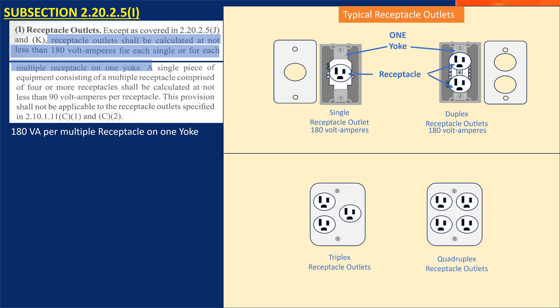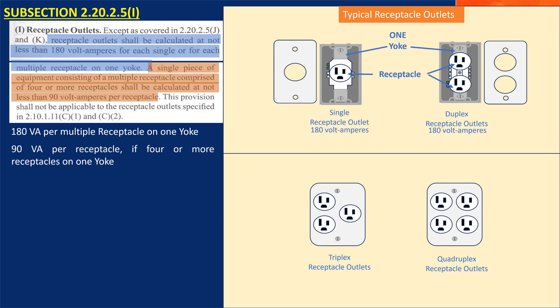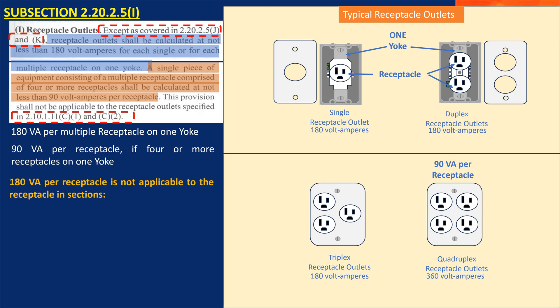How about the triplex and quadruplex receptacle outlets? A single piece of equipment consisting of multiple receptacles comprised of four or more receptacles shall be calculated at least 90 volt amperes per receptacle. Therefore, quadruplex receptacle outlets shall be 360 volt amperes, while the triplex is only 180 volt amperes. However, this rating does not apply to receptacle outlets covered in subsections 2.20.2.5j, 2.20.2.5k, 2.10.1.11c1, and 2.10.1.11c2.